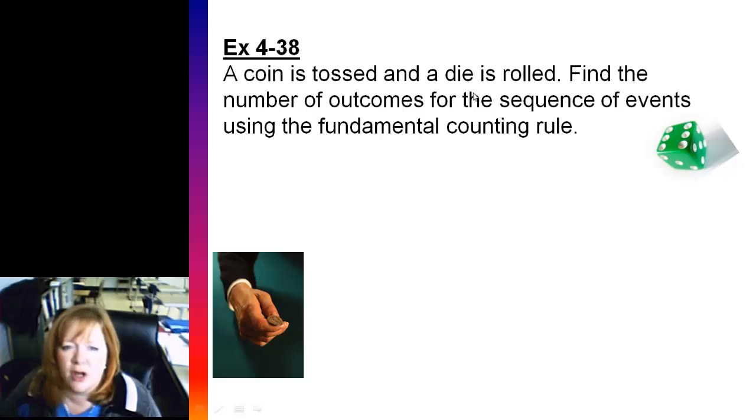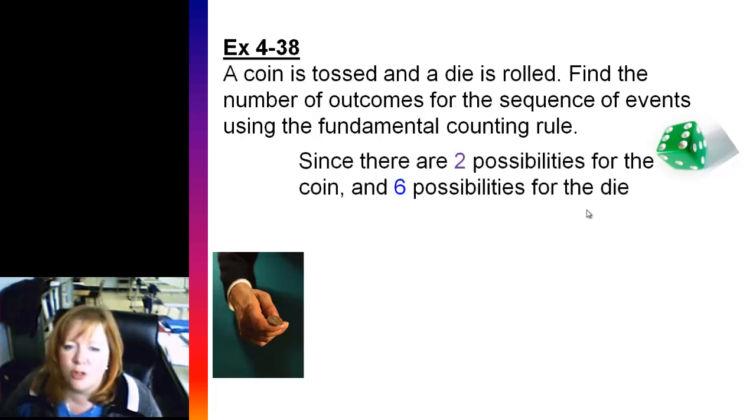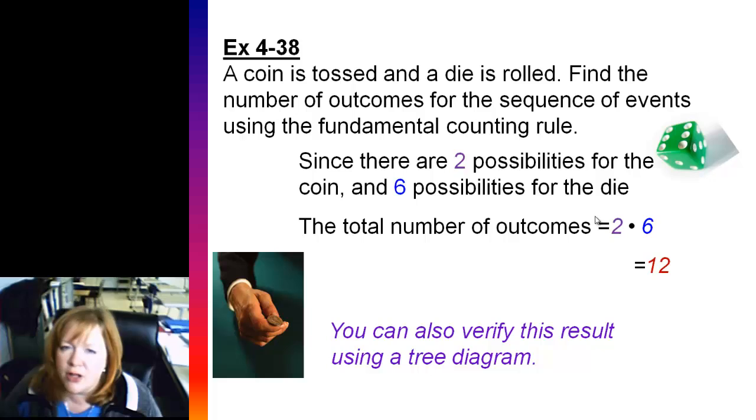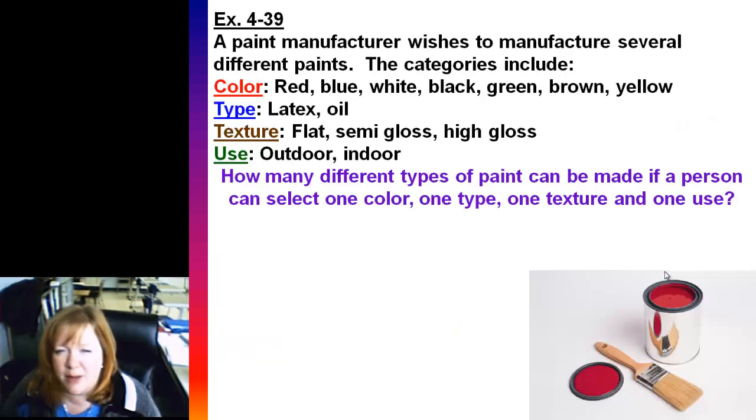So let's get into some examples. Here's a coin toss and a die being rolled. Find the number of outcomes for the sequence using the fundamental counting rule. Well, since you have two possibilities for the coin, it could be heads or tails, and there's six possibilities for the die, we're going to multiply those. Two times six to give us a grand total of twelve. You can also verify the result using a tree diagram to get the total number, but tree diagrams can get confusing. I like just doing the straight formulas.